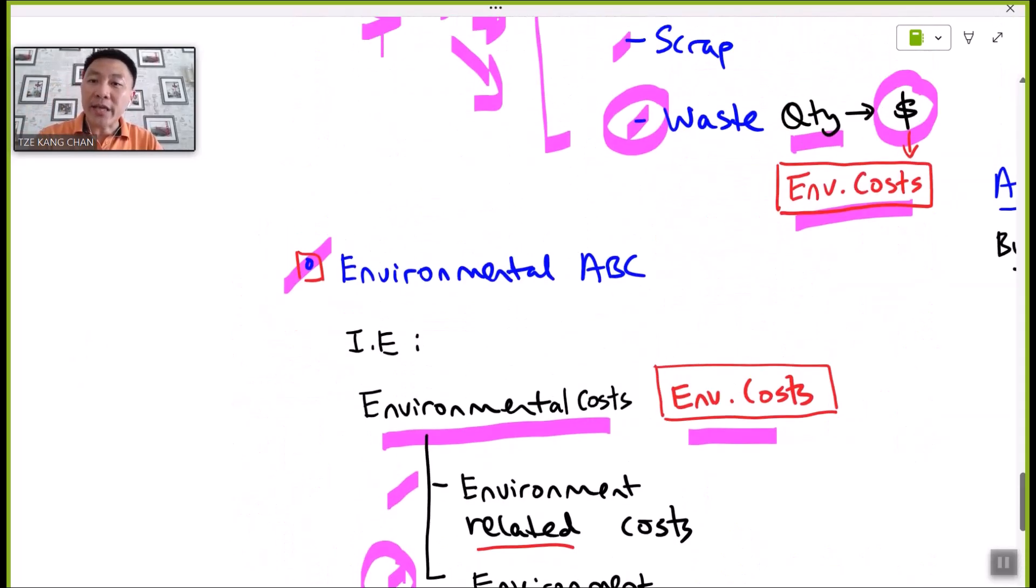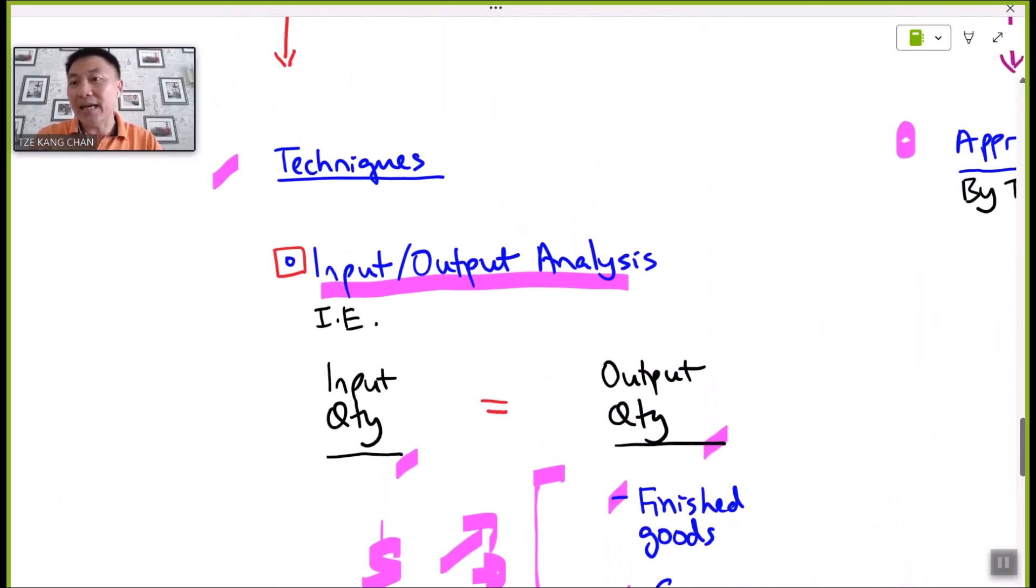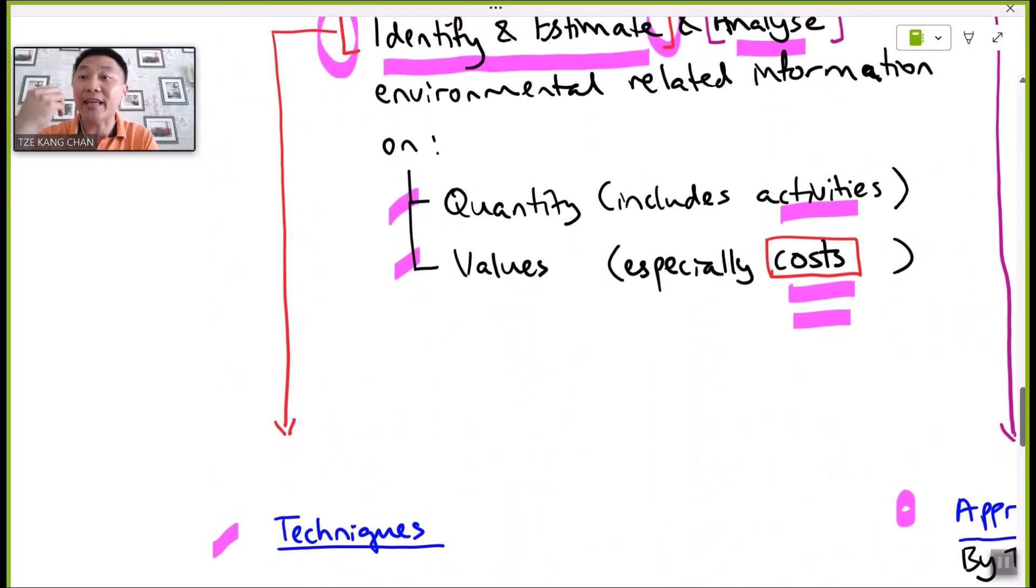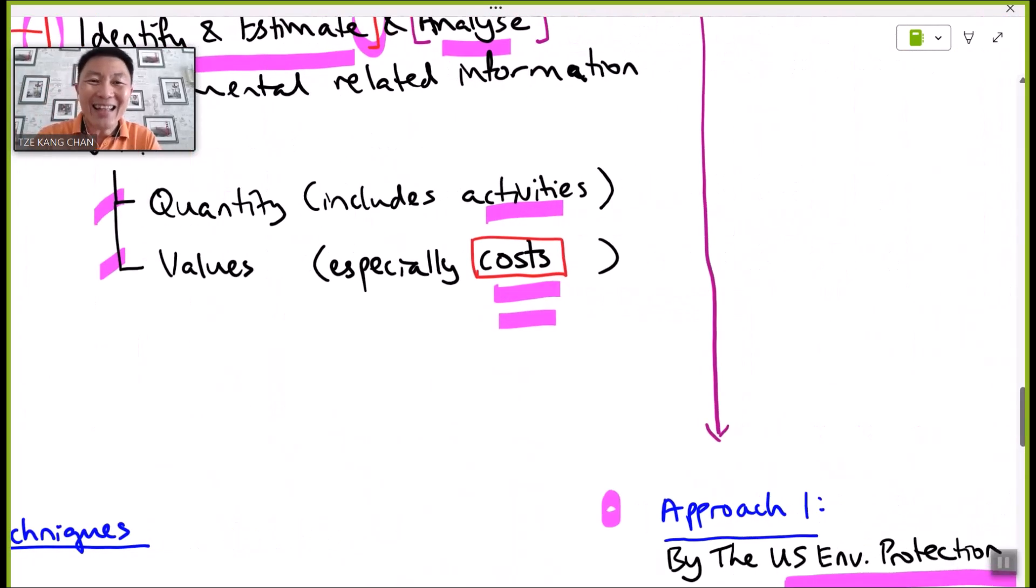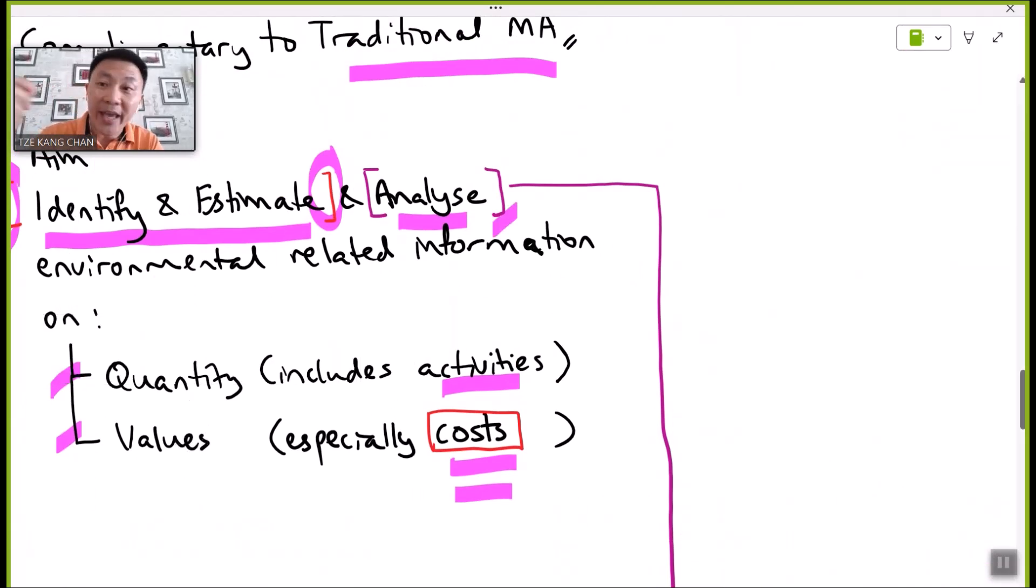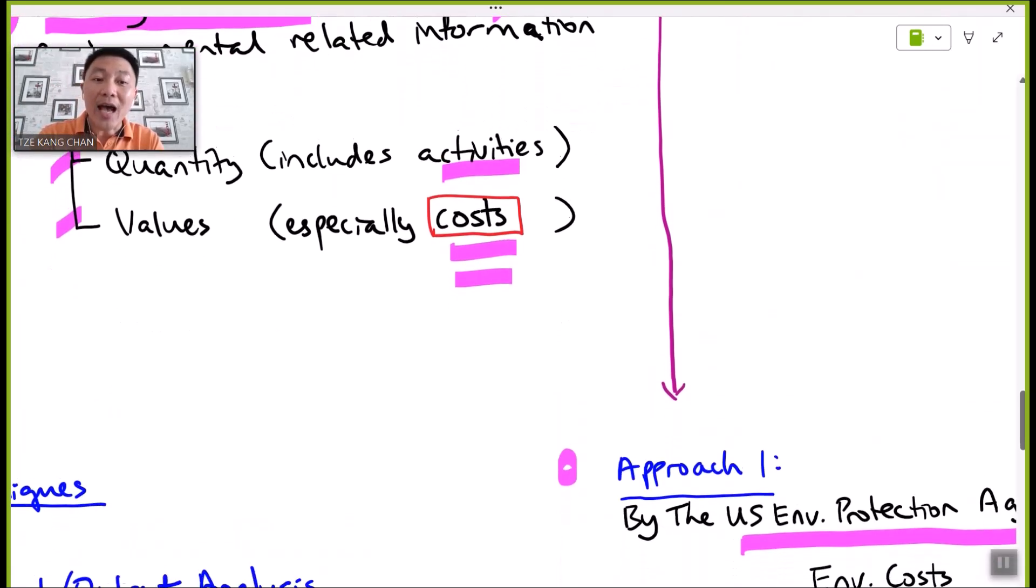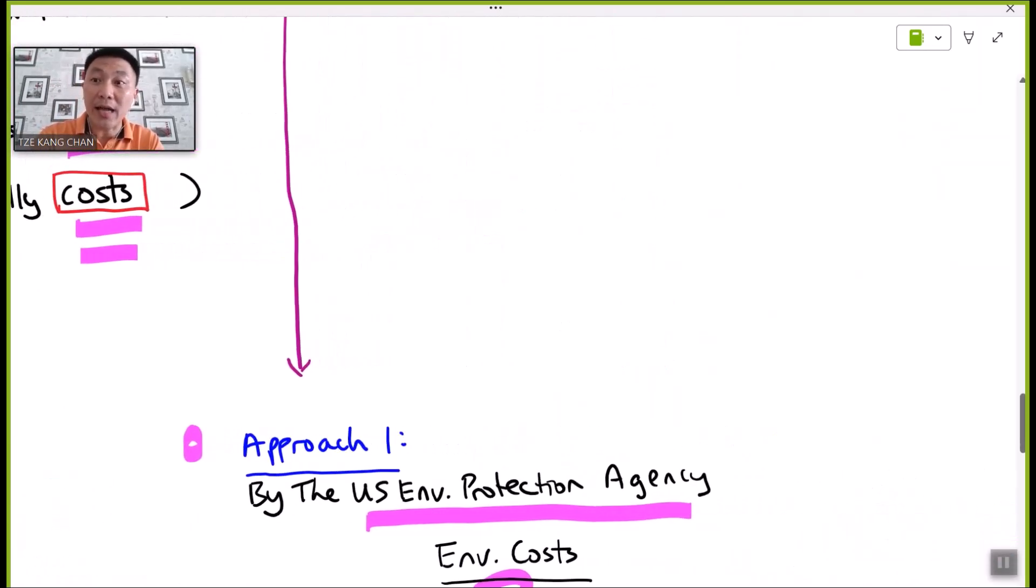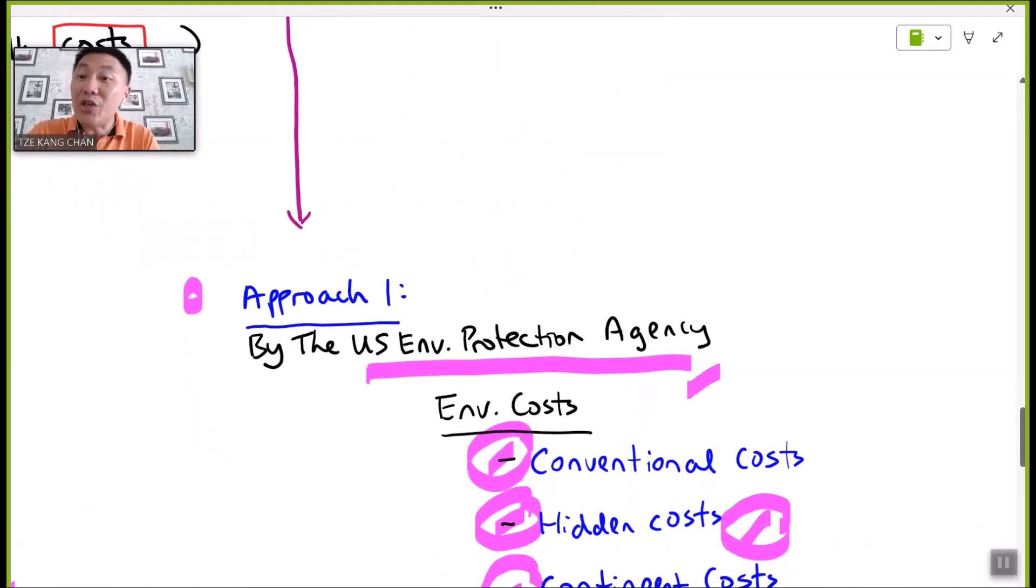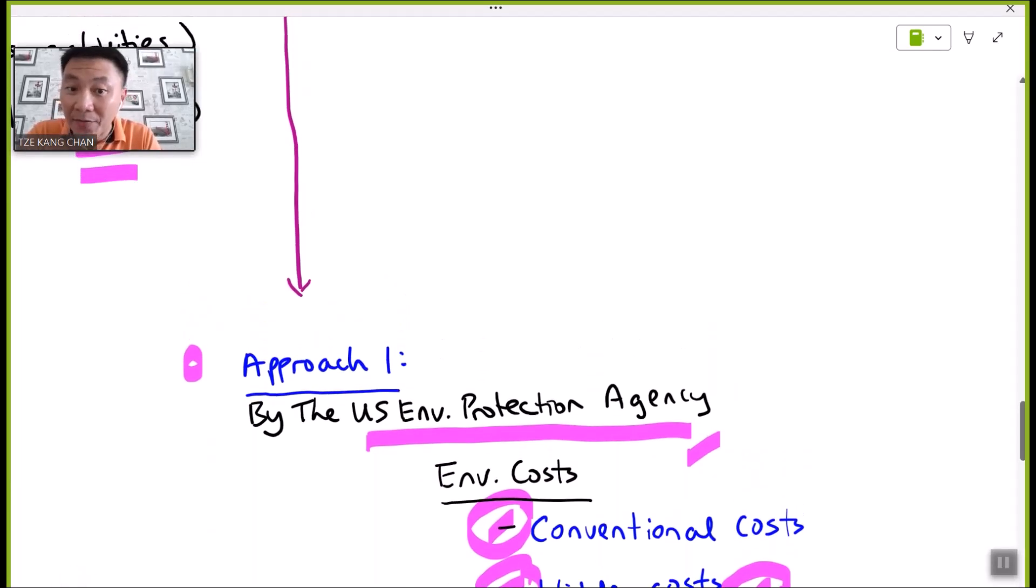With the usage of the three techniques as discussed, how are we able to disclose such costs in a clear manner? That is all about the way to analyze, the way to classify the costs. There are two main approaches engaged for such purpose. The first approach is brought up by the U.S. Environmental Protection Agency.